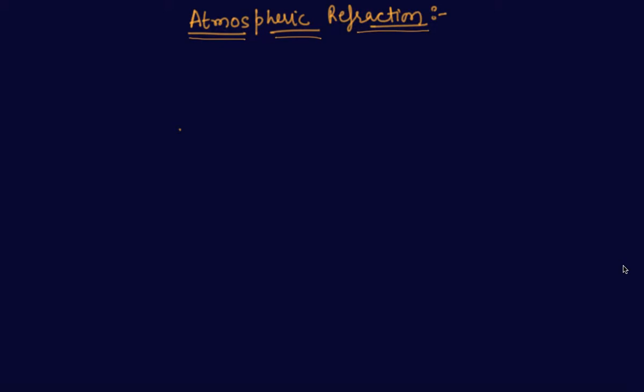Hello students, my name is Sumit Mehta. Today we will be discussing atmospheric refraction, which is a topic in the chapter named 'The Human Eye and the Colorful World.' So far we have discussed about the human eye, refractive index, and what happens when light passes through a prism and when white light passes through a prism. Now we will discuss about atmospheric refraction.